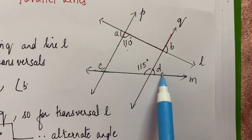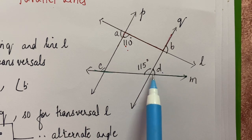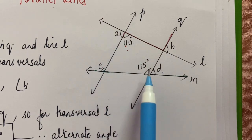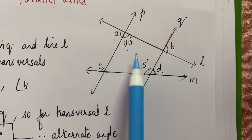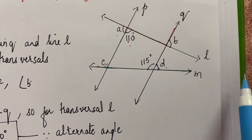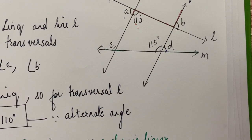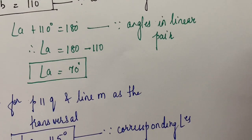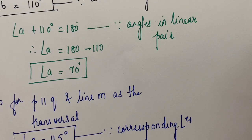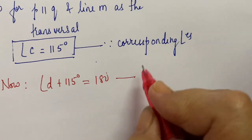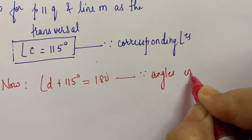Now angle D is left. If you have a look at these two angles, they are again angles in a linear pair. You can also consider angle A and angle D as exterior alternate angles, but I will go for angles in a linear pair. So, angle D plus 115° is equal to 180°. Reason: angles in a linear pair.